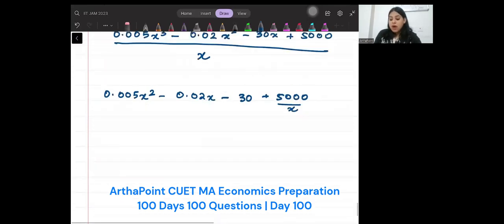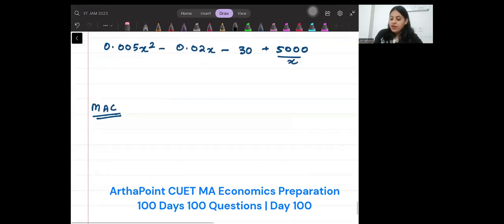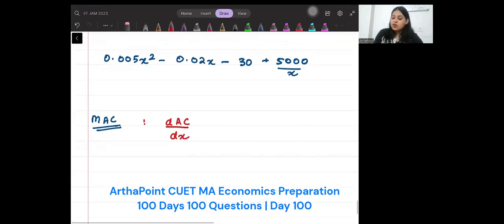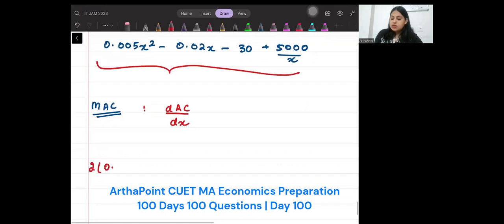Now it is asking marginal average cost. But you have to differentiate your average cost function. So it is asking how average cost changes as x changes. So if I differentiate this, I will get 2(0.005)x - 0.02 + 5000, and differentiation of 1/x will be -1/x².